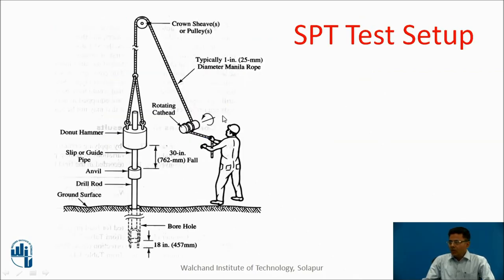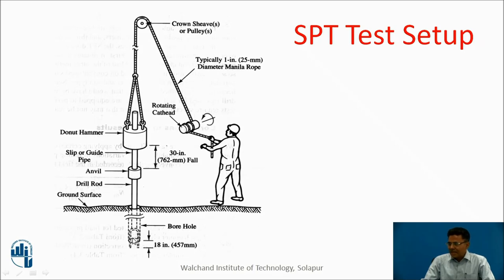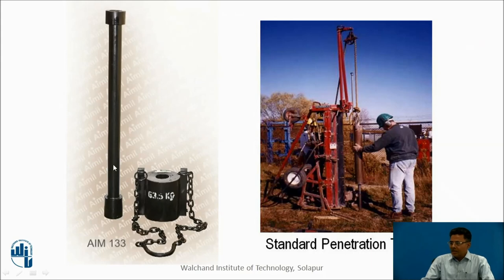Looking at this figure, there is a pulley over which a rope passes. The rope passes over a rotating drum so that the rope can be released, which releases the donut hammer onto the anvil, and then it can be lifted up again. The fall of this hammer is 762 millimeters. This is the slip guide pipe, and this is the anvil on which the donut hammer falls. This is the drill rod to which the split spoon sampler is connected — the 63.5 kg weight which falls. This is the setup of a standard penetration test.